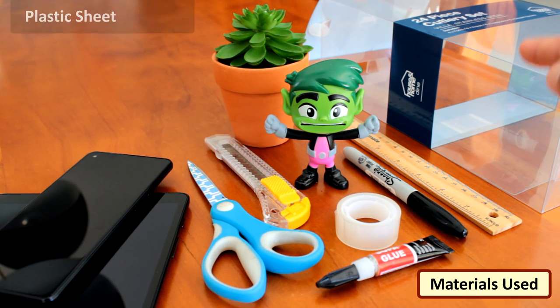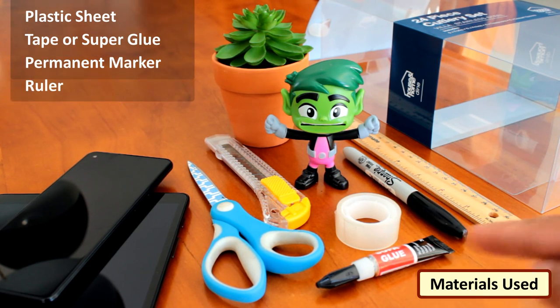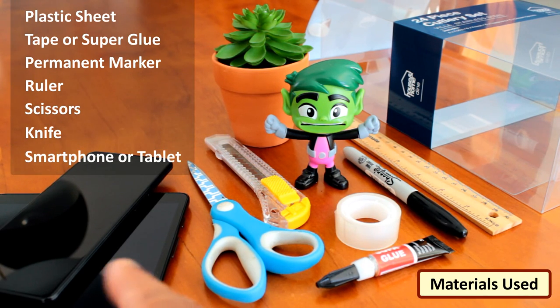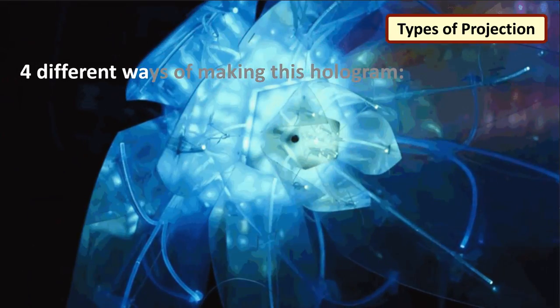For this project we need a plastic sheet from a packaging material or CD case, tape or super glue, permanent marker or pen, ruler, scissor, knife or a glass cutter, a smartphone or a tablet and optional sandpaper and cardboard. I came across 4 different ways of making this hologram.